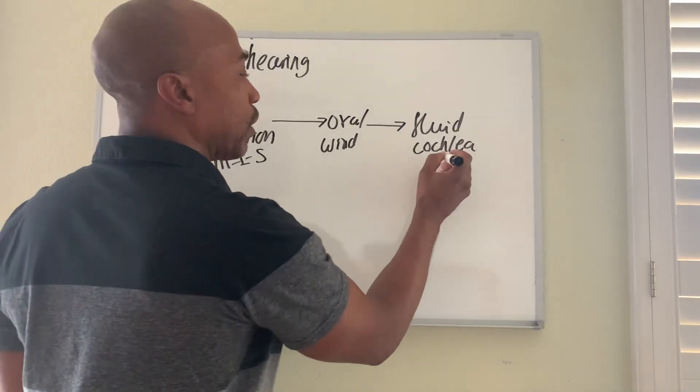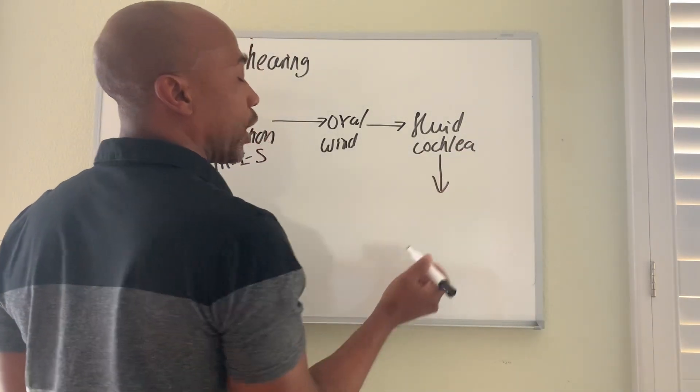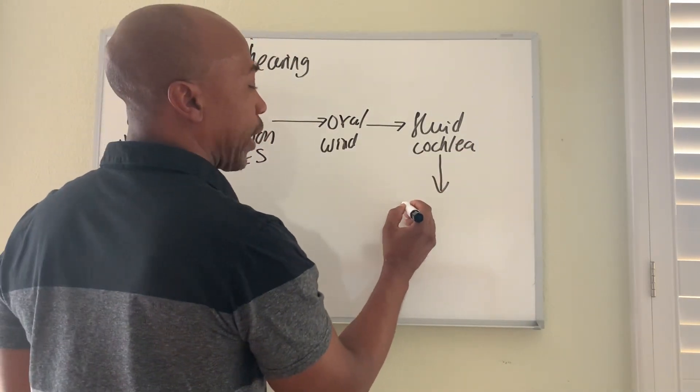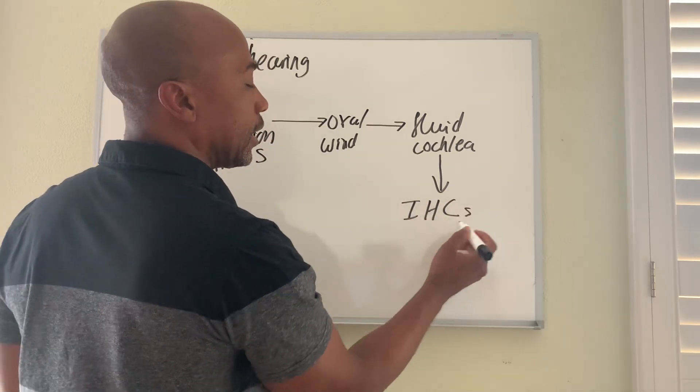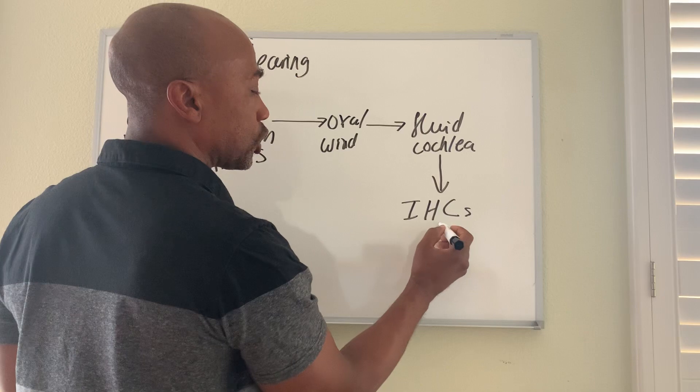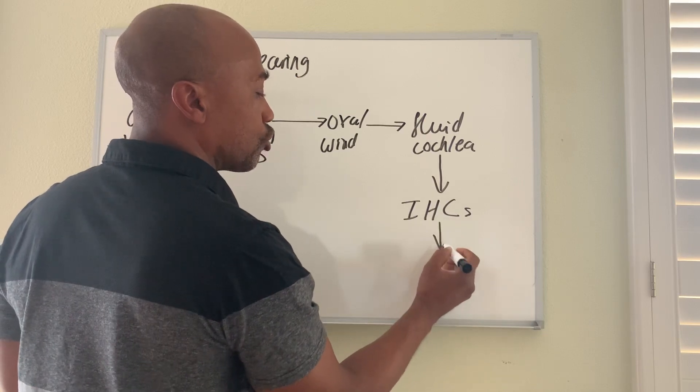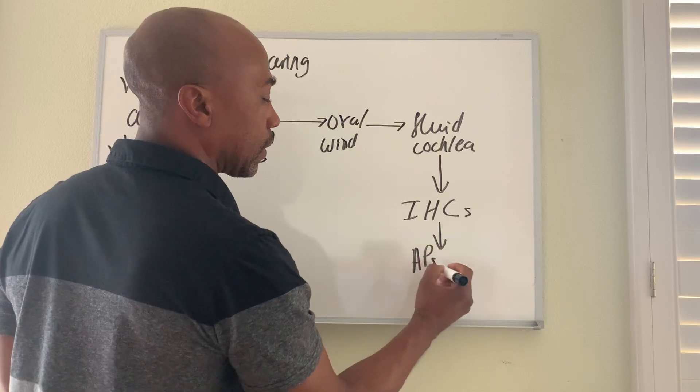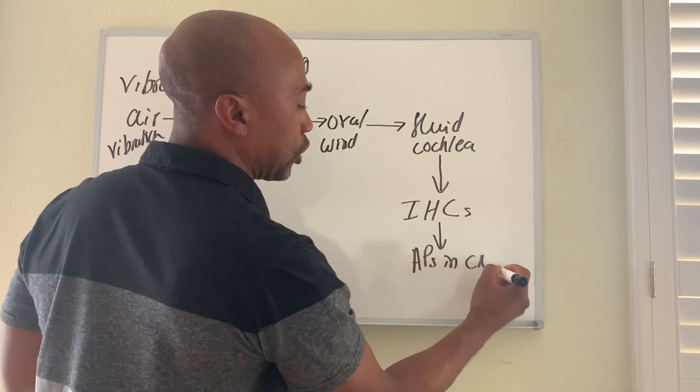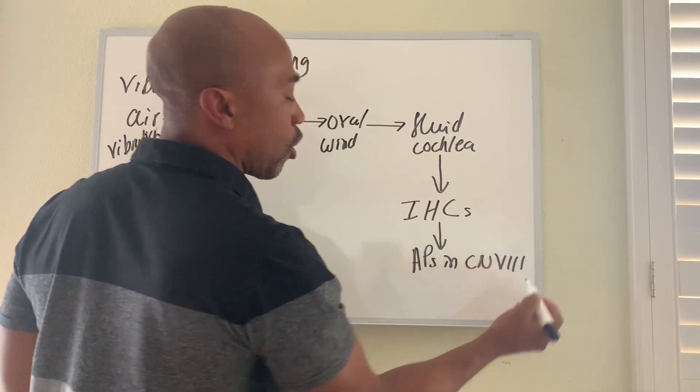Which then moves fluid, fluid inside the cochlea. And eventually, that fluid movement will vibrate things called hair cells, inner hair cells. And then those inner hair cells will create action potentials in cranial nerve number eight, what we call your auditory nerve.